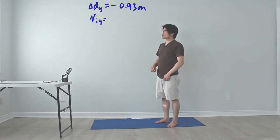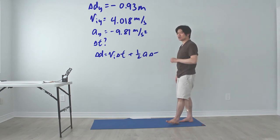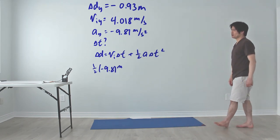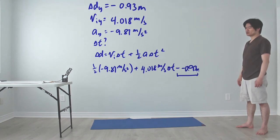So with our values of Vi, Ay, and delta dy, we can solve for delta t. You'll notice you'll need to use the third kinematic equation. Unfortunately, we need to rearrange this from highest degree to lowest degree as soon we'll need to use the quadratic formula.